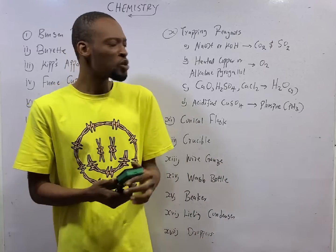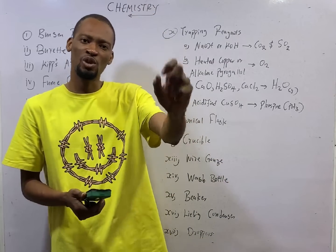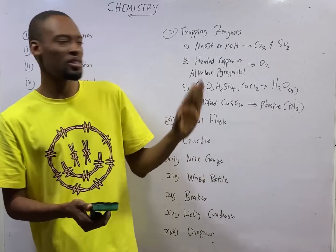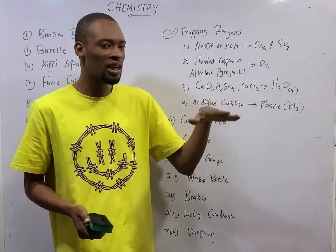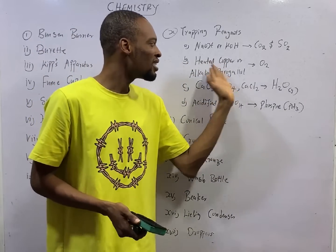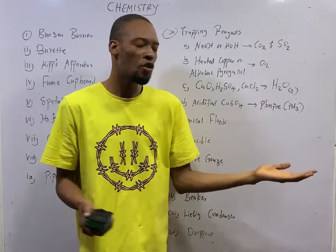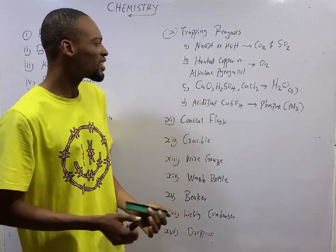For example, to remove oxygen from air or to trap oxygen from air, we use the alkaline pyrogallol or heated copper. These are the trapping reagents for oxygen.